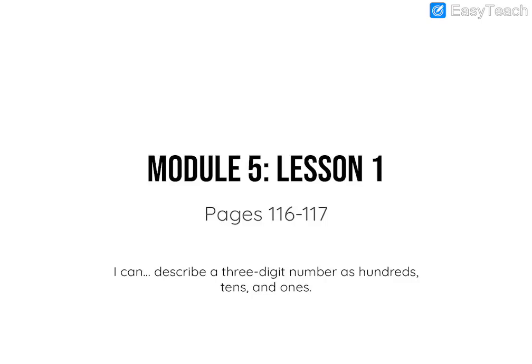Welcome to Module 5, Lesson 1. You're going to go to page 116. Our I Can Statement is: I can describe a three-digit number as hundreds, tens, and ones. So we're going to continue our work like we did in the last module with three-digit numbers.